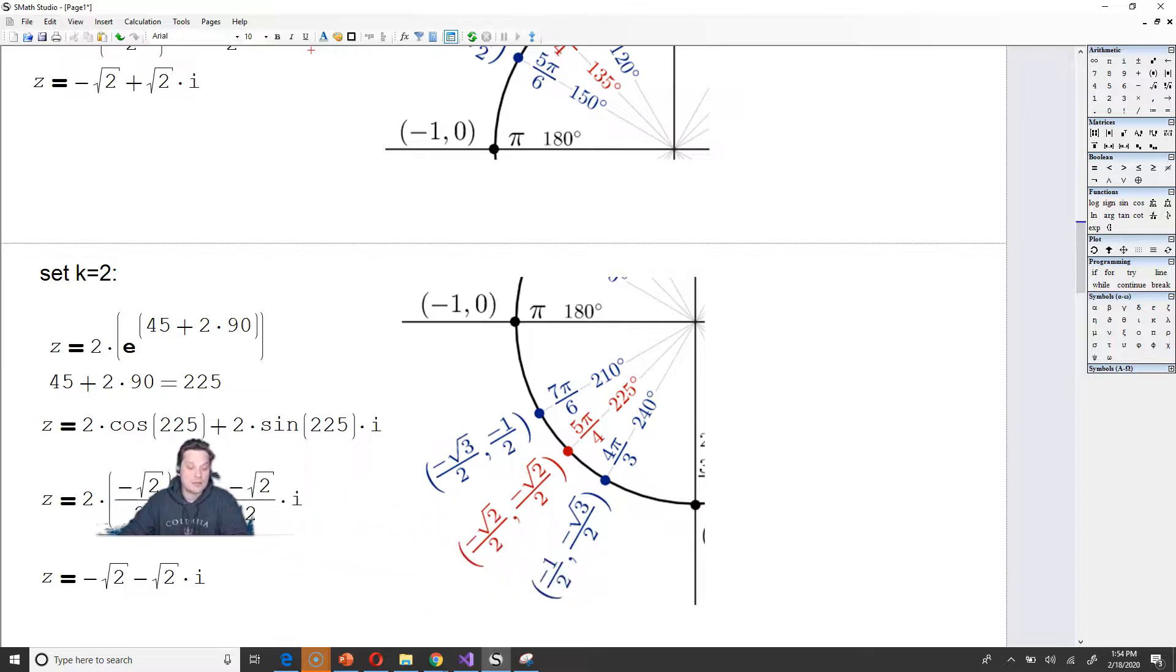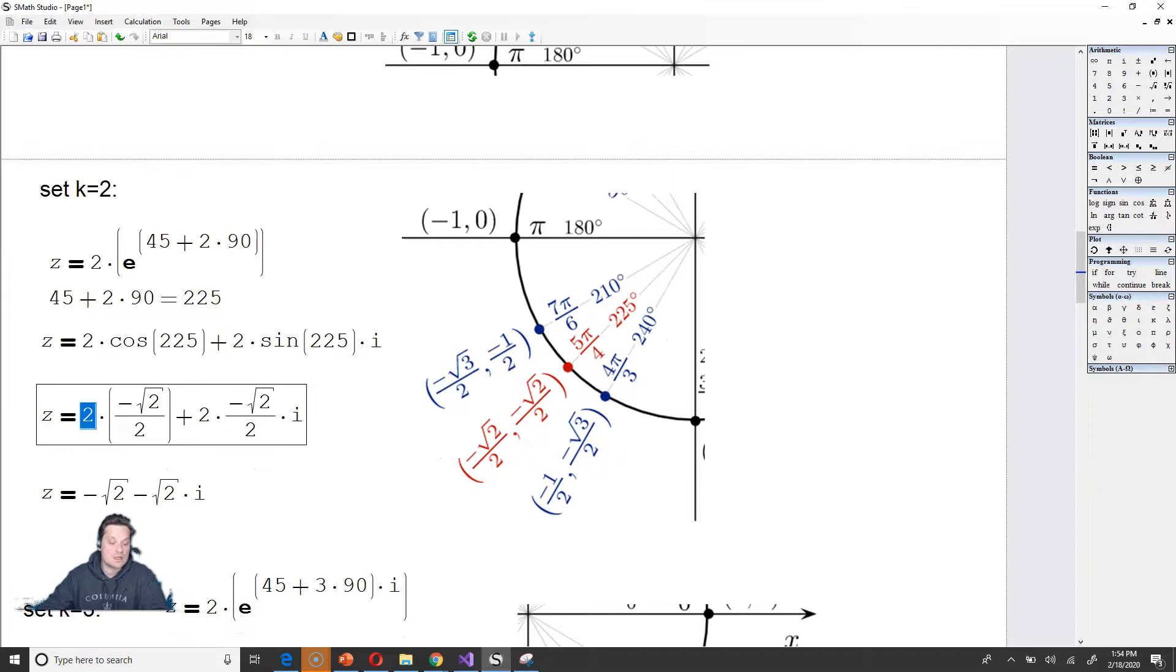So it's going to give you 2 times the cosine of 225 plus 2 times the sine of 225i. Well, you replace cosine of 225 with the negative root 2 over 2. Replace sine of 225 with negative root 2 over 2 also. So, as before, I cancel this denominator with that, and then also on this side, cancel this quantity with that one. And that's going to give us negative root 2 minus root 2i as the next root in this position.